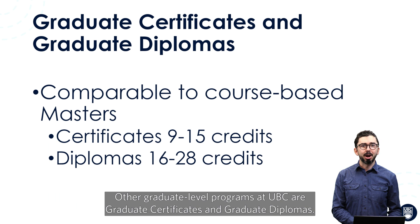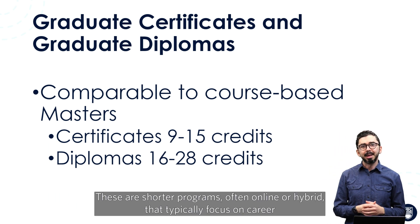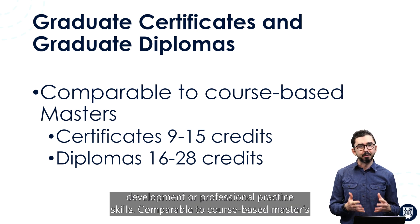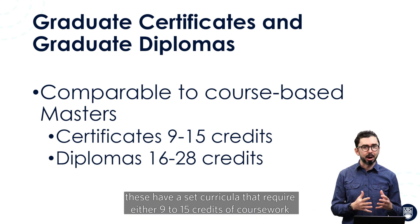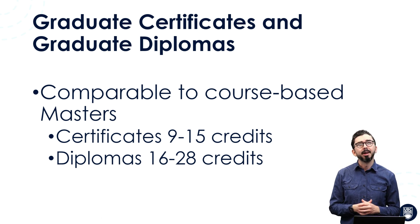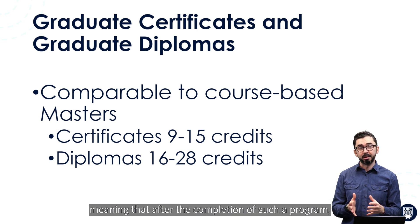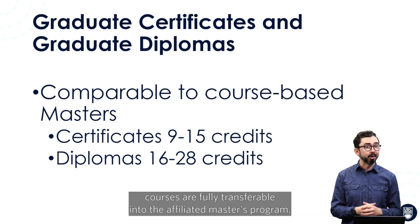Other graduate level programs at UBC are graduate certificates and graduate diplomas. These are shorter programs, often online or hybrid, that typically focus on career development or professional practice skills. Comparable to course-based master's, these have a set curricula that require either 9 to 15 credits for course-based certificates or 16 to 28 credits for diplomas. Some of these graduate level programs are designed to ladder into master's programs, meaning that after the completion of such a program, courses are fully transferable into the affiliated master's program.